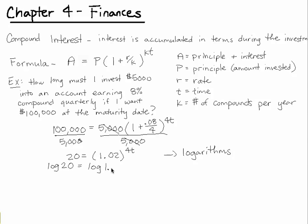So we're taking the log of both sides. This doesn't affect our equality. The left side is still equal to the right hand side. And what happens is this exponent can be written out front of the log. So we can rewrite this as log of 20 equals 4T times log of 1.02.